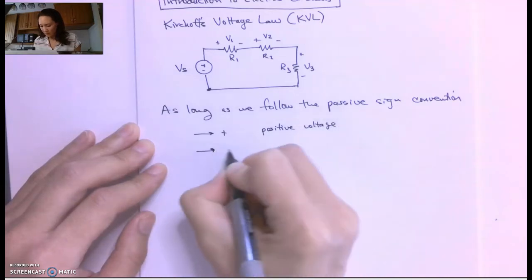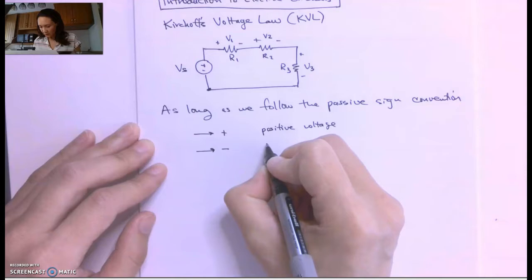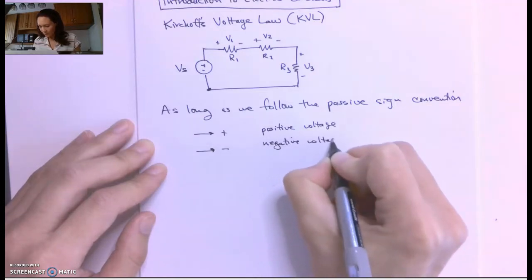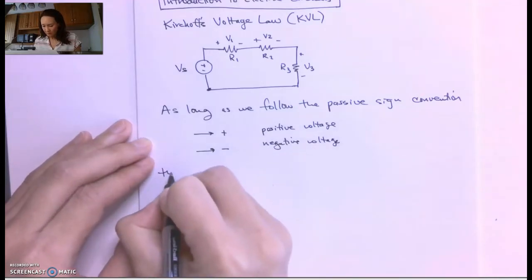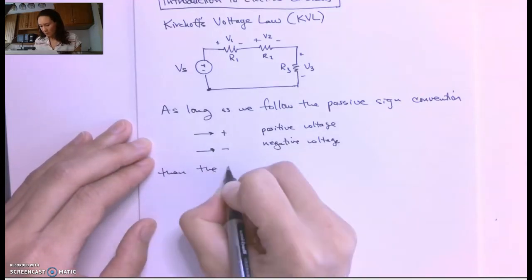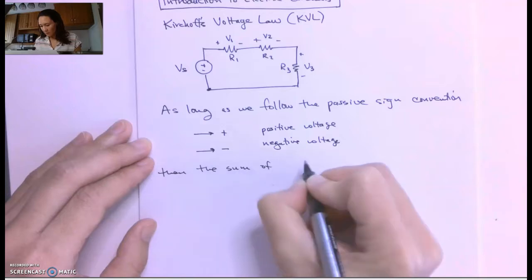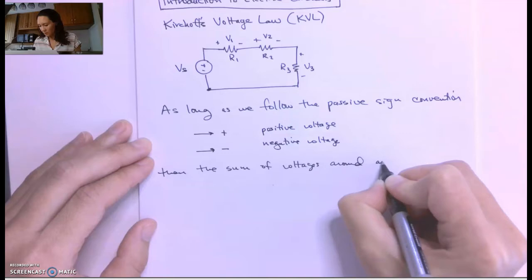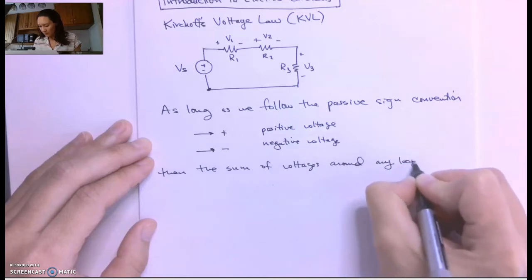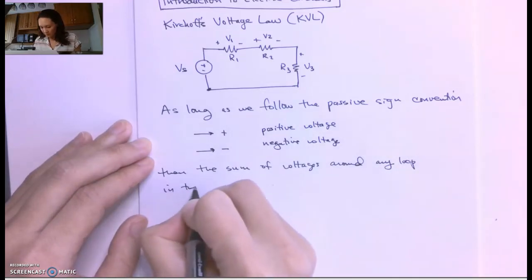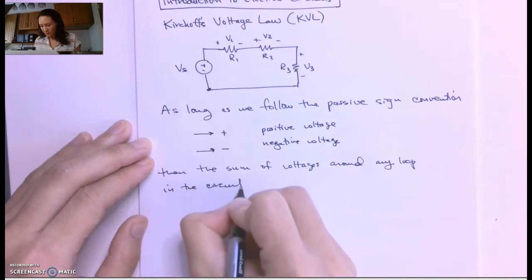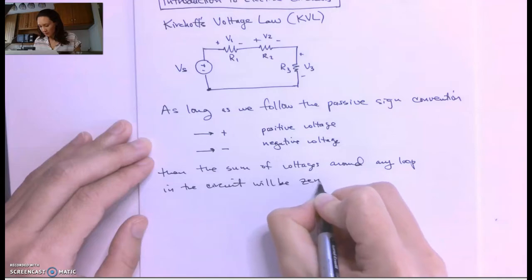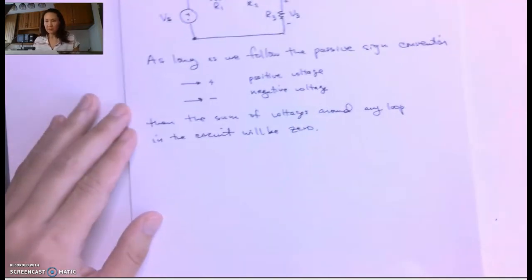And if we go into a negative side of a circuit element, that's going to be a negative voltage. Then the sum of voltages around any loop in the circuit will be zero. Okay, so that's what KVL tells us.